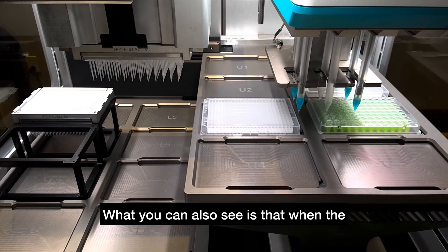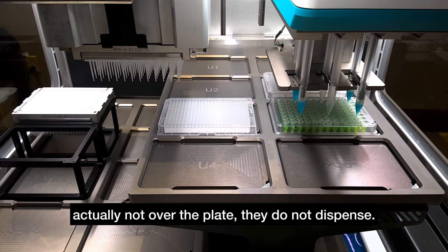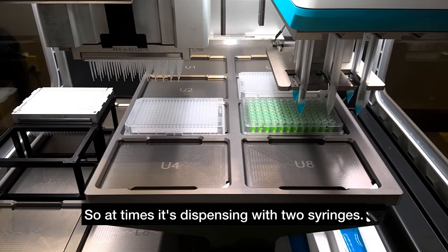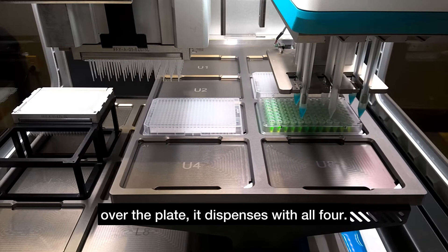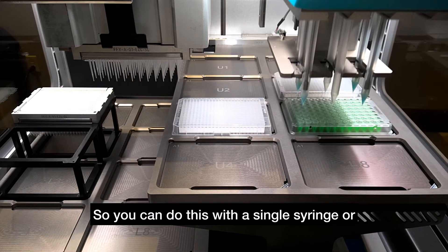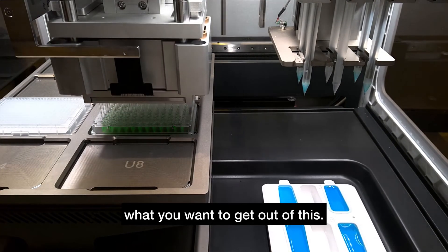What you can also see is that when the two syringes on the left or the right are not over the plate, they do not dispense. At times it's dispensing with two syringes, and when all four syringes are over the plate it dispenses with all four. You could do this with a single syringe or two or three or any number depending on what you want to get out of this.